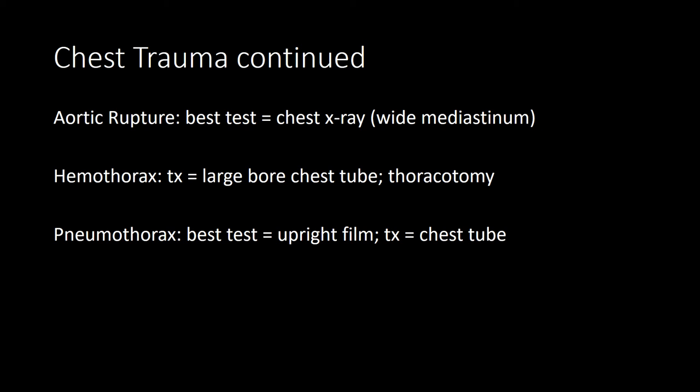For suspected aortic rupture with chest trauma, get a chest X-ray showing widening of the mediastinum. The most common injury site is the descending aorta distal to the subclavian artery, and it has a very high mortality rate. For hemothorax, you need a minimum of 300 mL of blood to appear on X-ray, and treatment is a large-bore chest tube. Indications for surgical thoracotomy are immediate drainage of greater than 1500 mL or greater than 200 mL per hour for two to four hours.